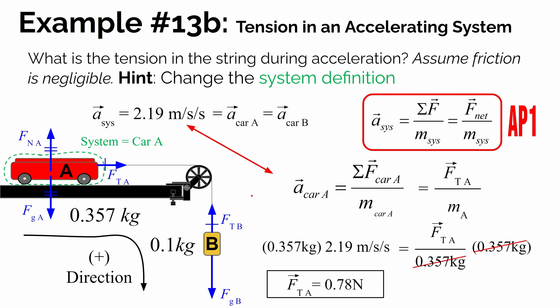This demonstrates confidence in using Newton's second law to analyze multi-object systems that are accelerating. To summarize: we first found the system acceleration by defining the system as both objects, summing all forces, and dividing by total mass. Then to find the tension, we redefined the system as just car A, used its known mass and acceleration to find the net force on it — which equals the tension. I hope this video has been helpful.